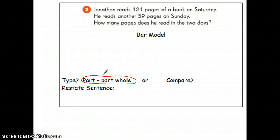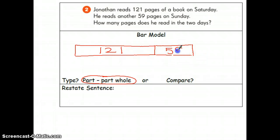I am going to set up my first rectangle, and this one is going to be longer. So, this is 121, and the second rectangle is going to represent 59, so this one's going to be a little shorter. I'm going to set up my bracket, because I'm looking how many books he read in the two days. So, the question mark goes in here.